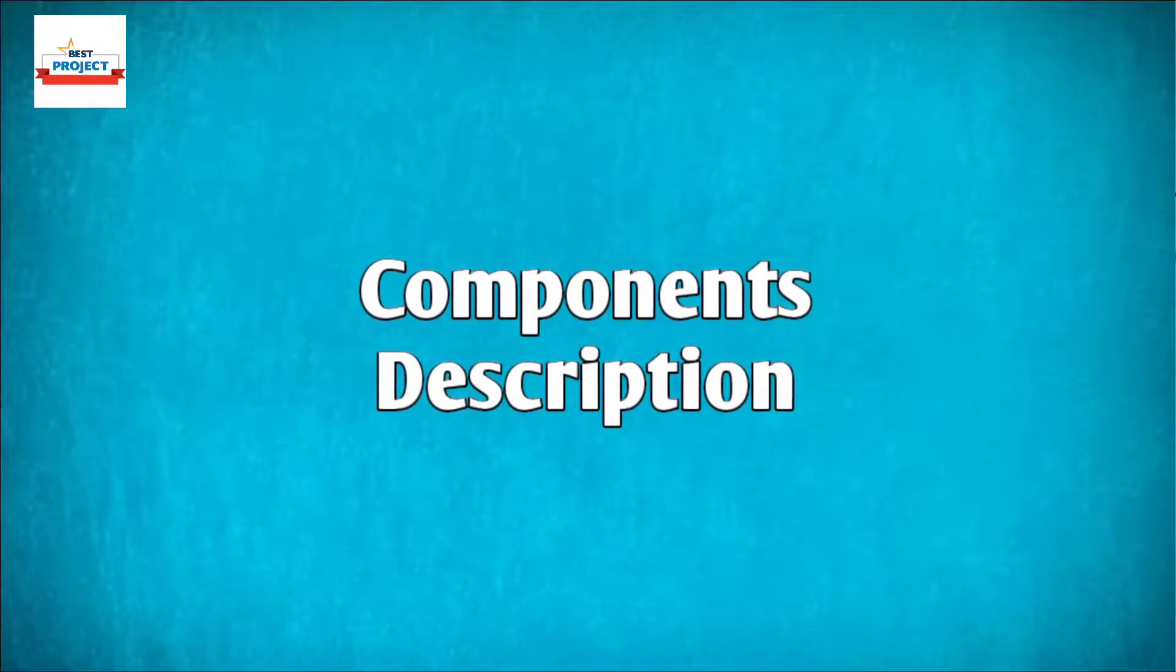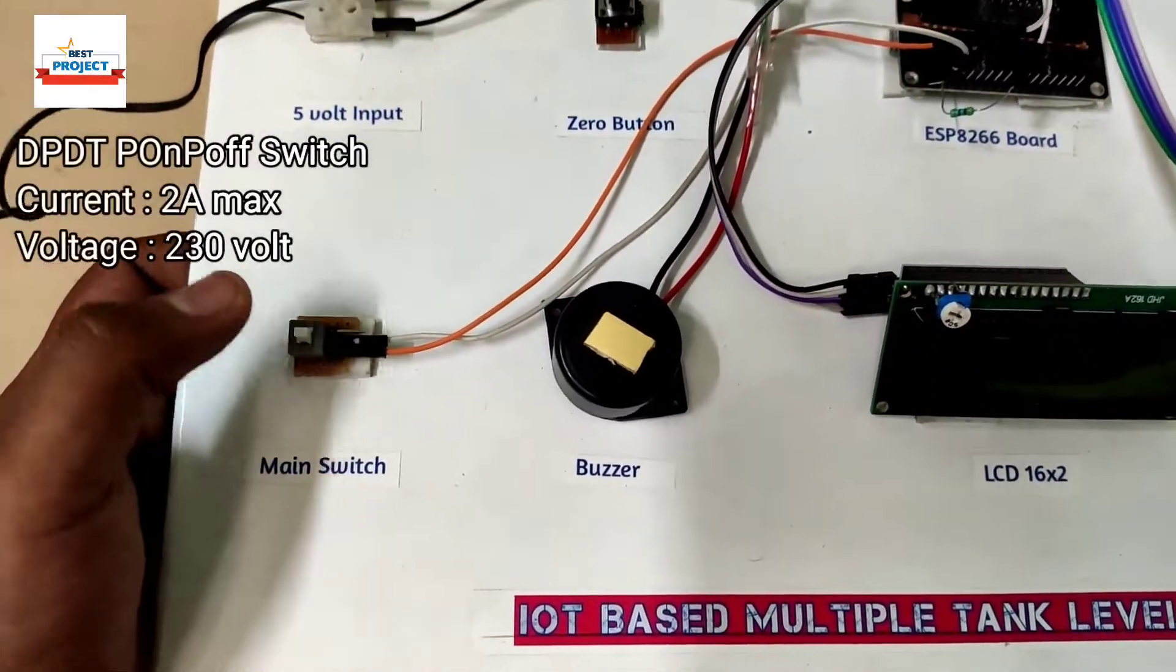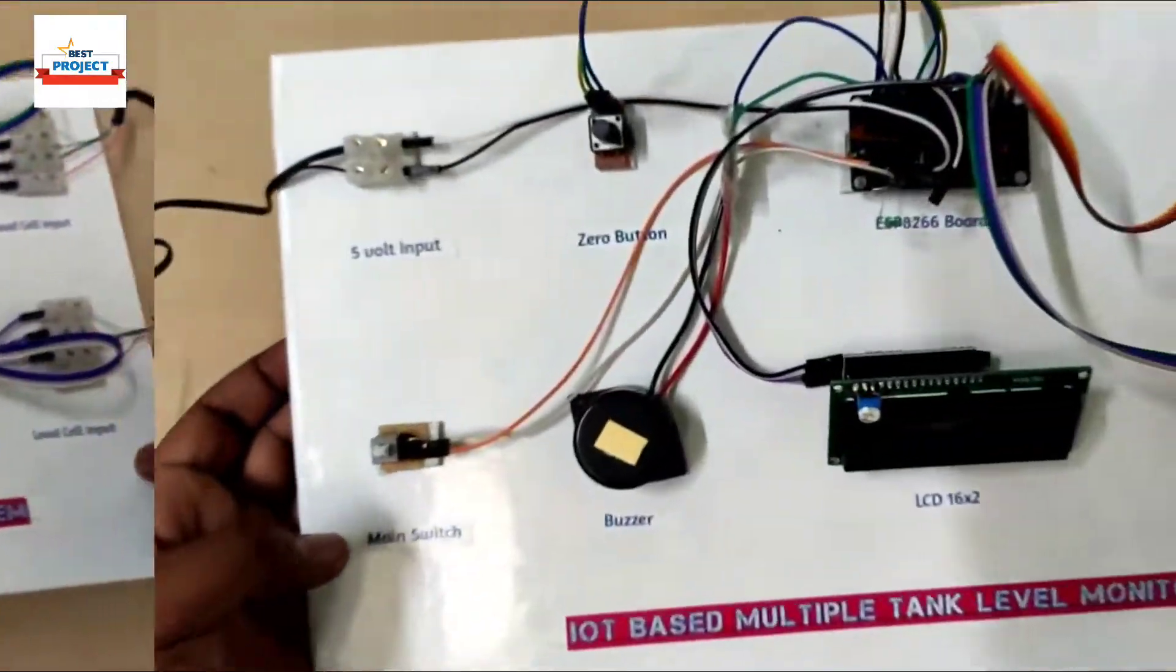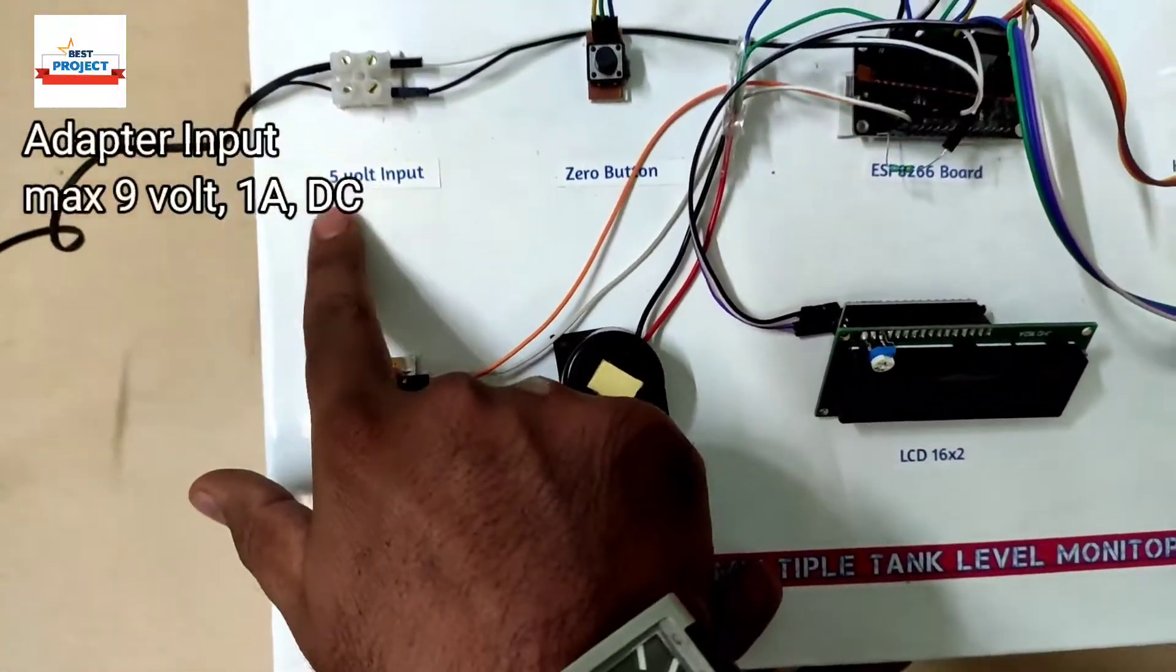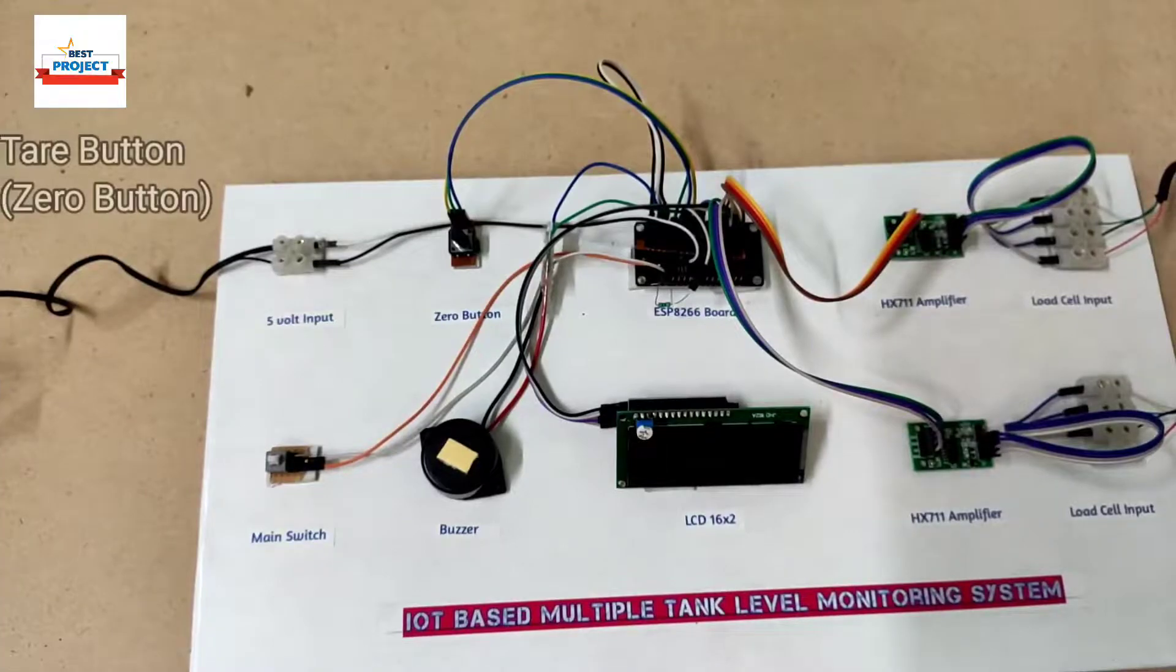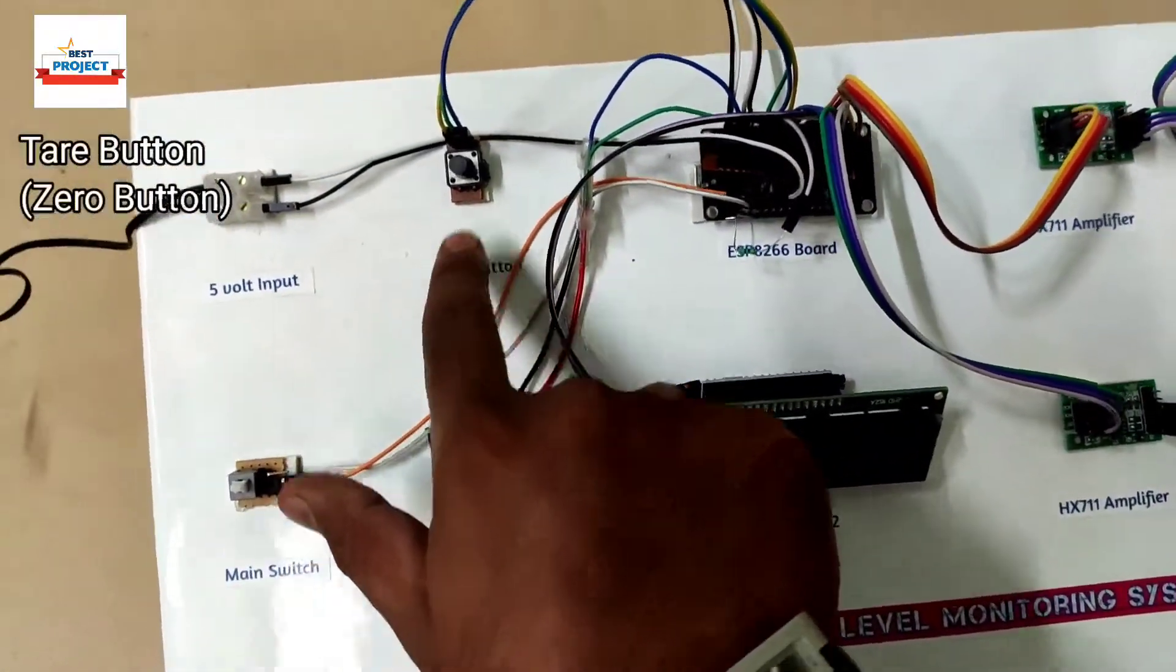First, we'll discuss the components we're using. The first component is the main switch, used to turn on and off the entire project. You can see the specifications on the left side. The second component is a white nut connector used to supply power.